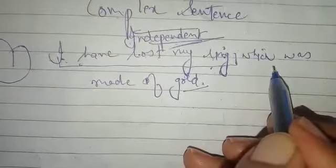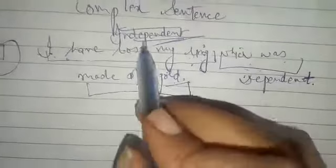So this is independent clause. But when we read which was made of gold, which was made of gold, this is dependent because alone it doesn't make a sense, as I have told you earlier also. So when there is combination of independent and dependent clauses in a single sentence, that sentence is called complex sentence.